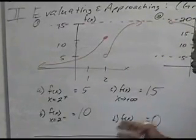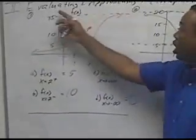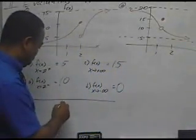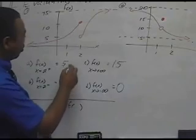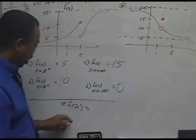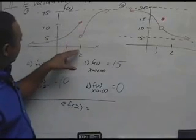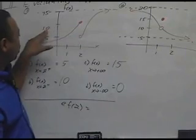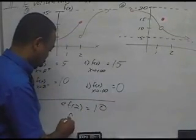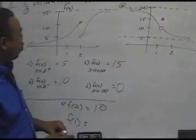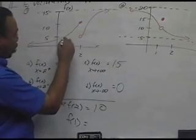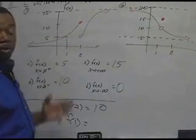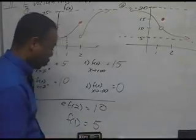Those are my approximation values. Now for the evaluations: f(2) is at this filled spot, which points toward 10. And f(1) — going to that spot on the graph — is 5.